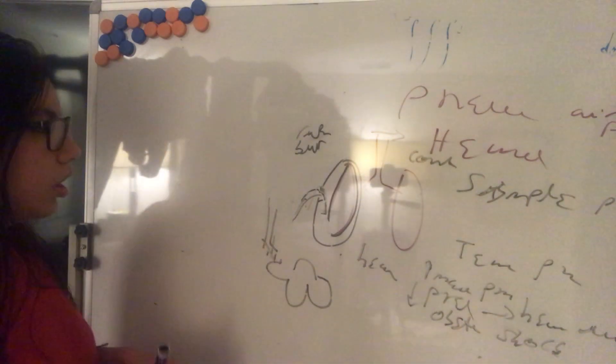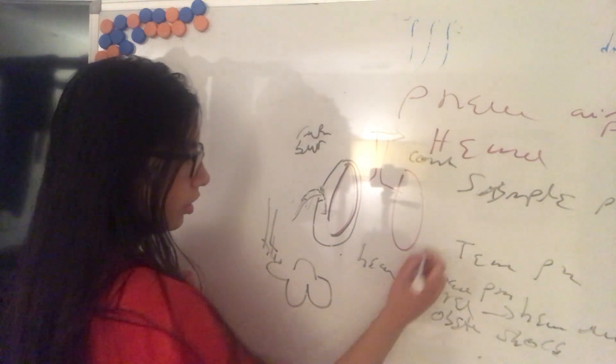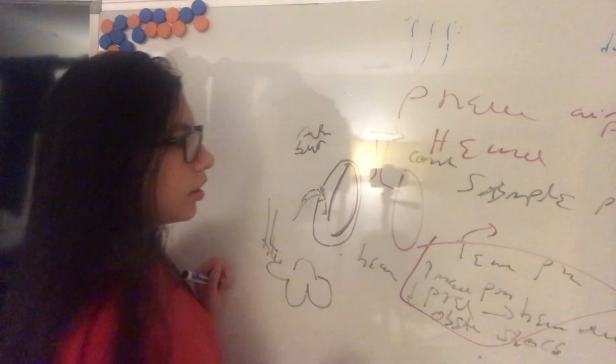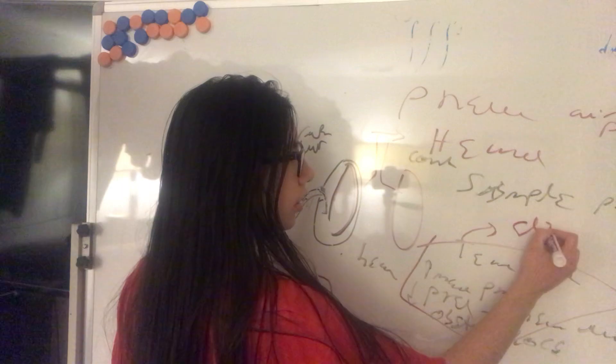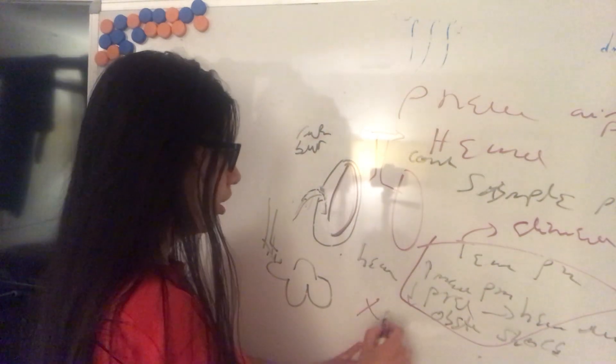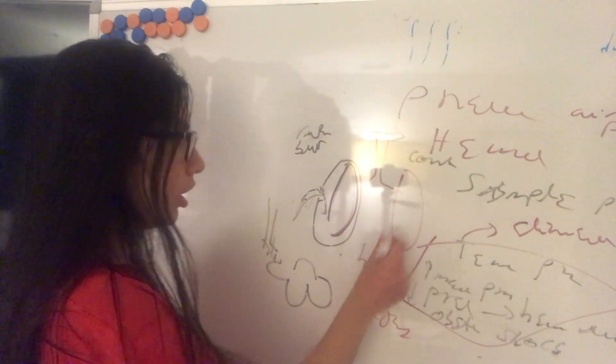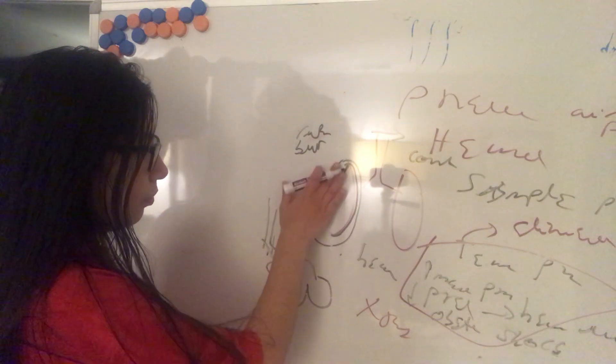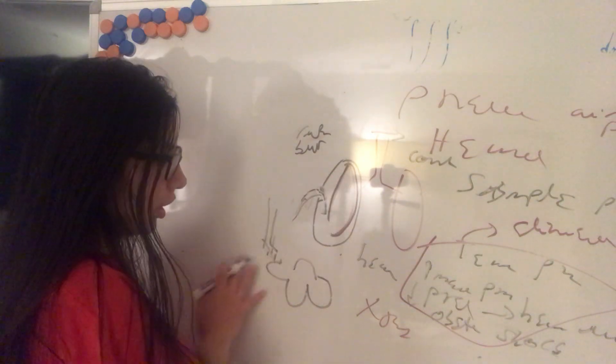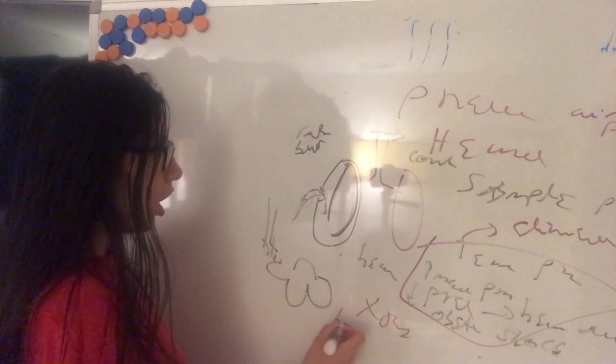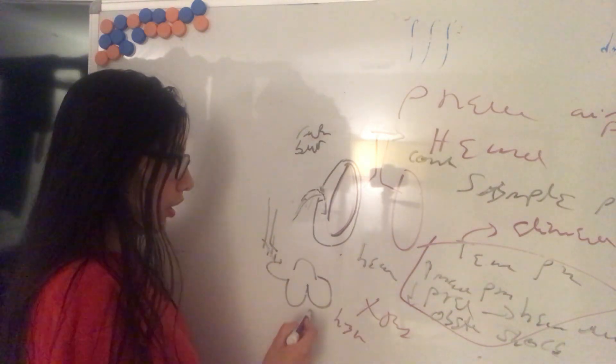So the tension pneumothorax is an emergency. The diagnosis is made clinically. On an x-ray we will see the deviation of the trachea and the mediastinal masses. This part would be on the physical exam hyper-resonant because of the air.